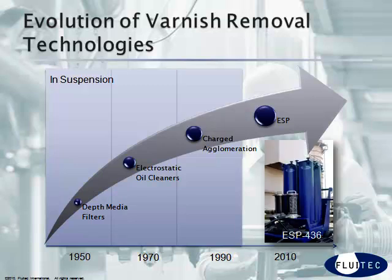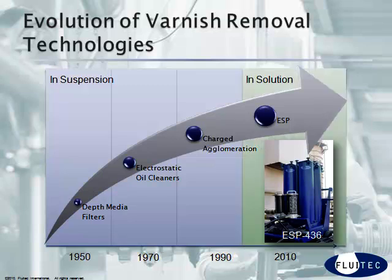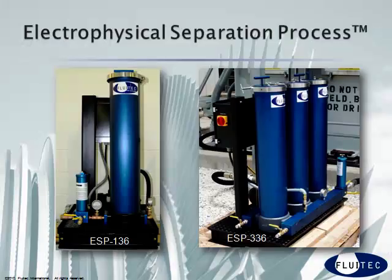Electrophysical separation process, or ESP, was specifically designed to remove soft contaminants while they are both in suspension and in solution. As a result, the technology has the ability to clean up heavily varnished lubricant systems much faster than other technologies. Most systems can be cleaned up in about a week. ESP will remove the contaminants before they have a chance to come out of solution and form deposits. It allows you to be predictive rather than reactive.